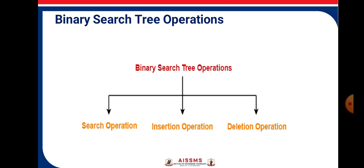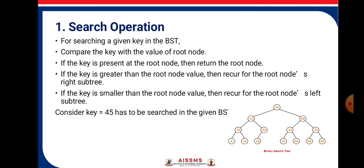Binary search tree operations include: search operation, insertion operation, and deletion operation. For searching a given key in the BST, compare the key with the value of the root node. If the key is present at the root node, then return the root node. If the key is greater than the root node value, then recurse for the root node's right subtree.